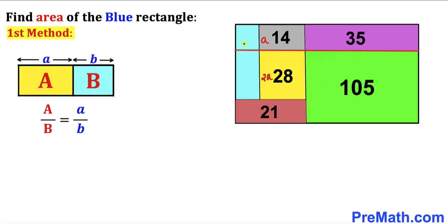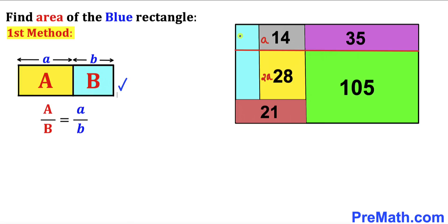I have created an imaginary red line that divides this blue rectangle into two parts — this rectangle and this rectangle. Both of these rectangles have the same length. The height of this rectangle is A and the height of this rectangle is 2A. So using the same concept, the area of this rectangle is going to be 1X and the area of this rectangle is going to be 2X. Our task is to find the value of X.